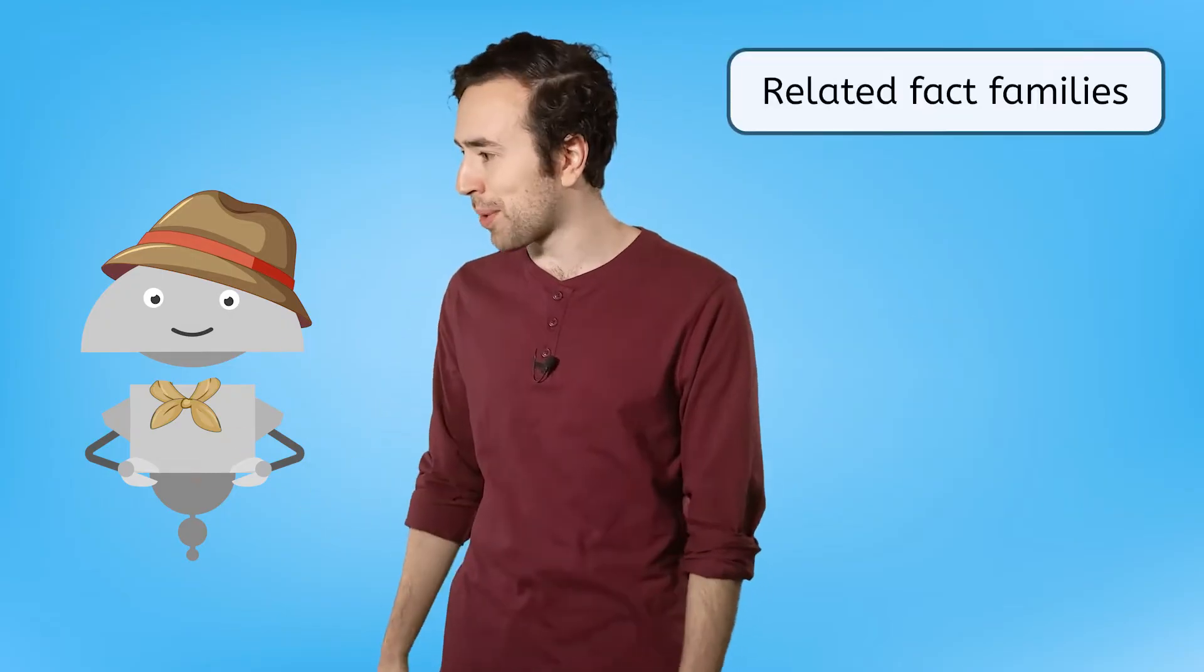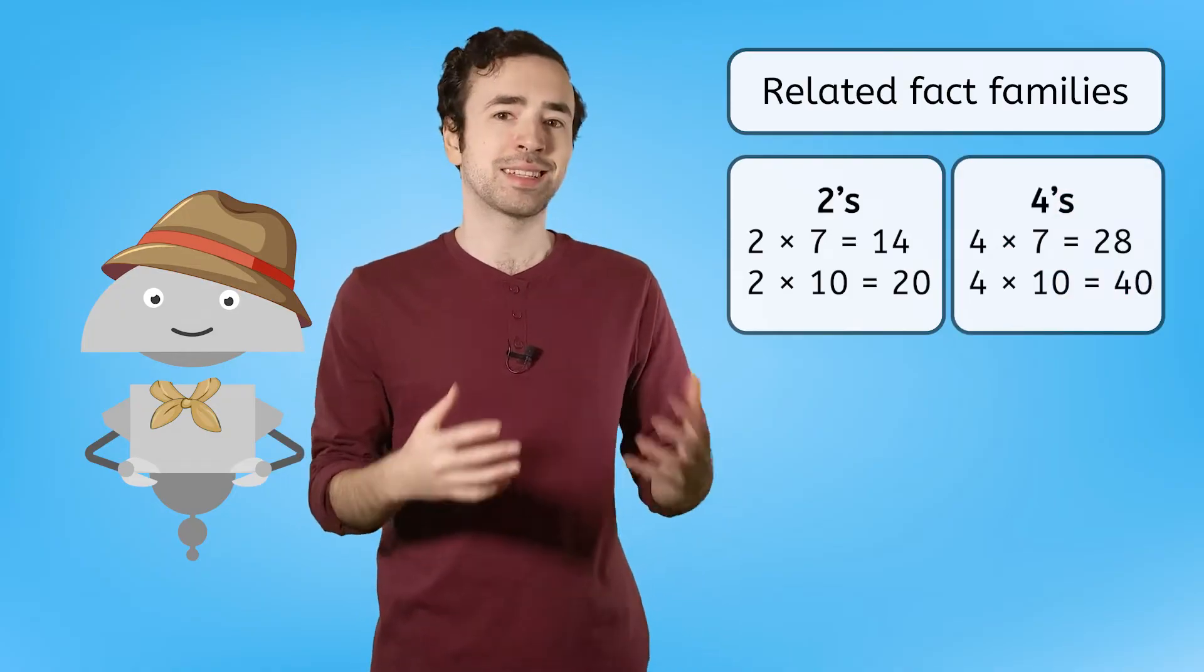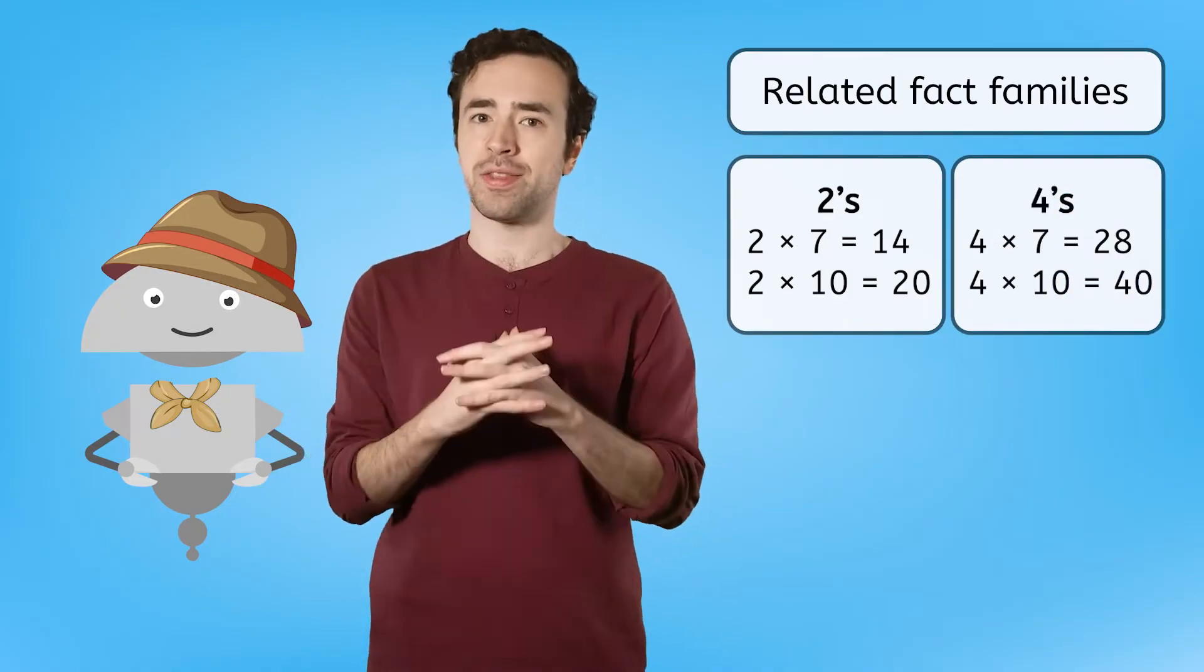Like how you and Tulip are related. Twos and fours each have their own sets of fact families, but since they're related, they can work together. But how?